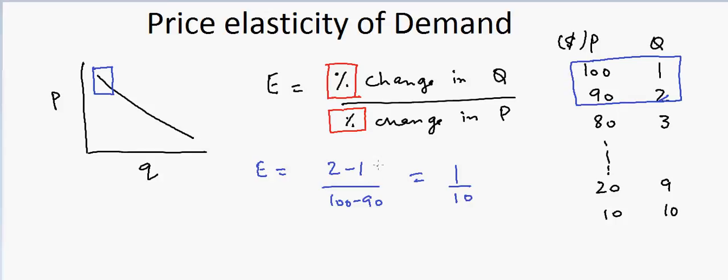But if you remember, I talked about that it's not the slope but it's a percentage change. So we also have to divide this by 2 and this by 100. If we do that, we get 100 by 2, or this will be equal to 5. So the elasticity is 5.